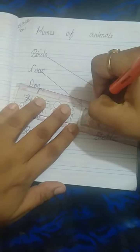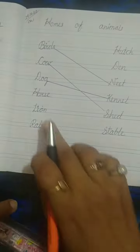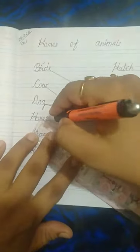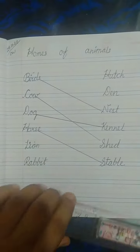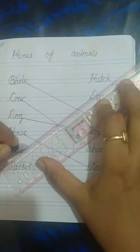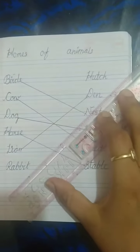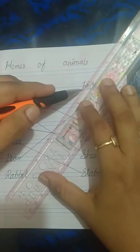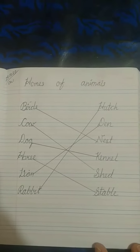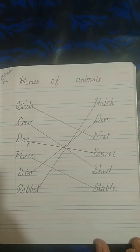Horse lives in a stable, so we match it with stable. Lion lives in a den, so we match it with den. Finally, rabbit lives in a hutch, so we match it with hutch. Write this down in your book in good handwriting. Thank you. Jay Swaminarayan.